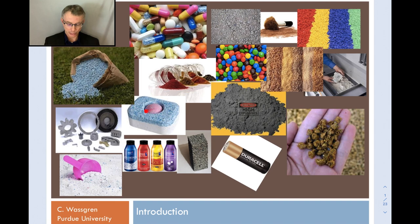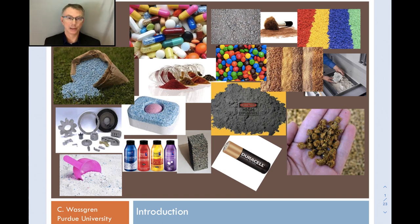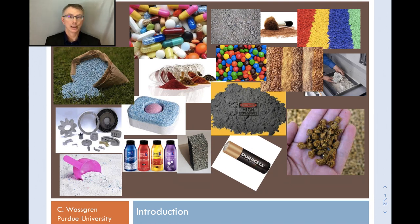Here we have a dishwashing detergent pod — essentially compressed powder you throw in your dishwasher. There are plastic pellets in the upper right, some cosmetics, a biomass material (perhaps compressed wood chips or sawdust in pellet form used for heating), and batteries with compressed powder anodes and cathodes — a very timely topic. Also shown is powdered laundry detergent. Many different products have particulates as the final form, and in many cases powder is present in the intermediate form as well.